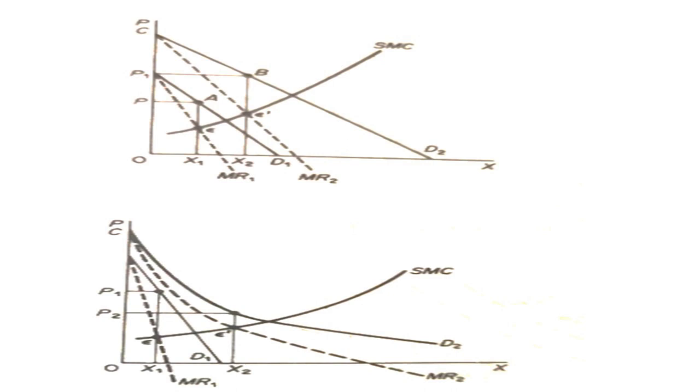In the new equilibrium, price may be lower than the initial level. If demand shifts to D2, the quantity in the new equilibrium will be larger — that is, OX2 is greater than OX1 — and it will be sold at a lower price, that is P1 is greater than P2, as we can see in figure 2.